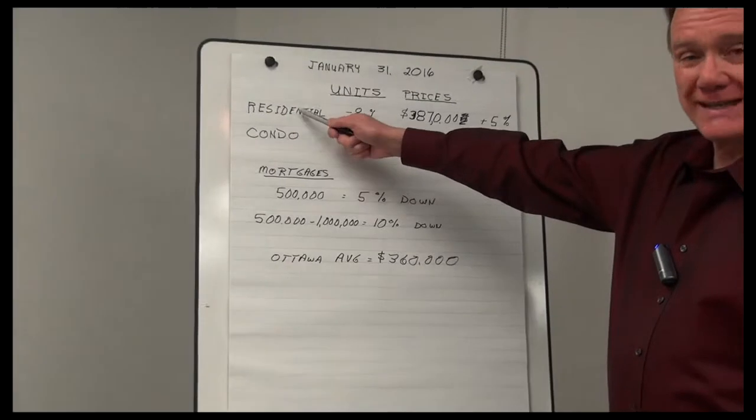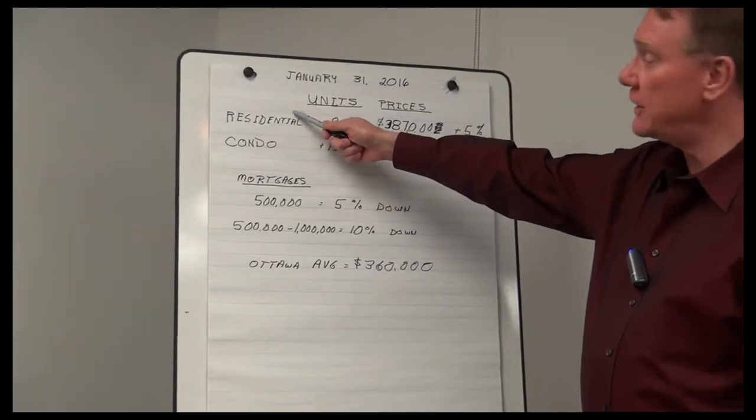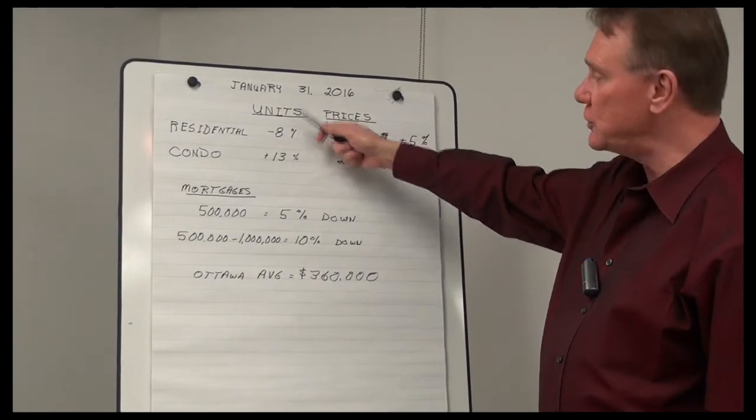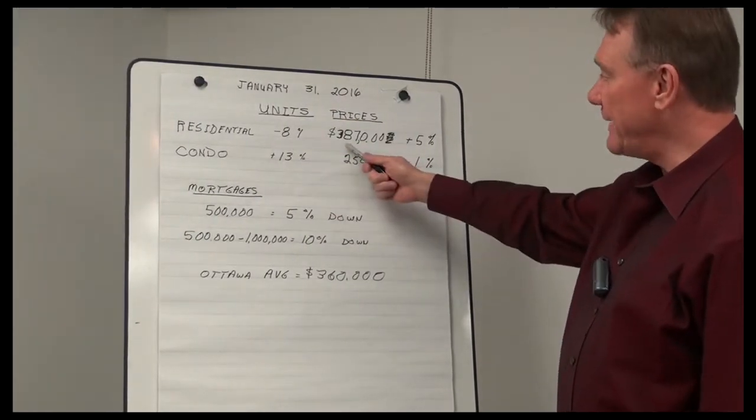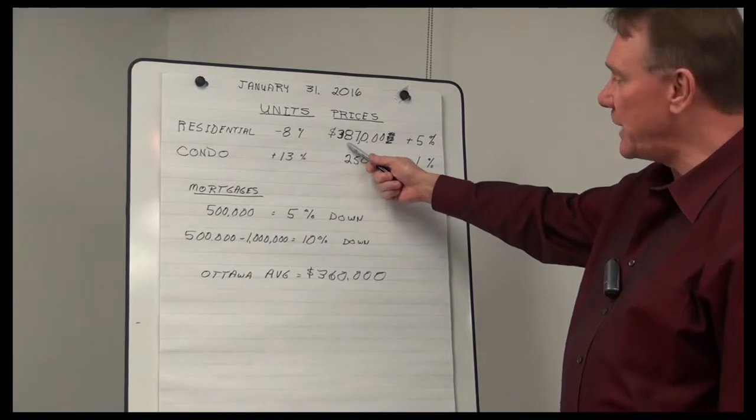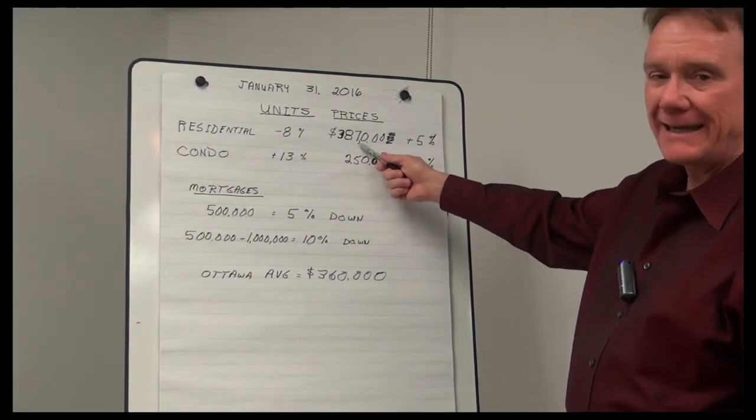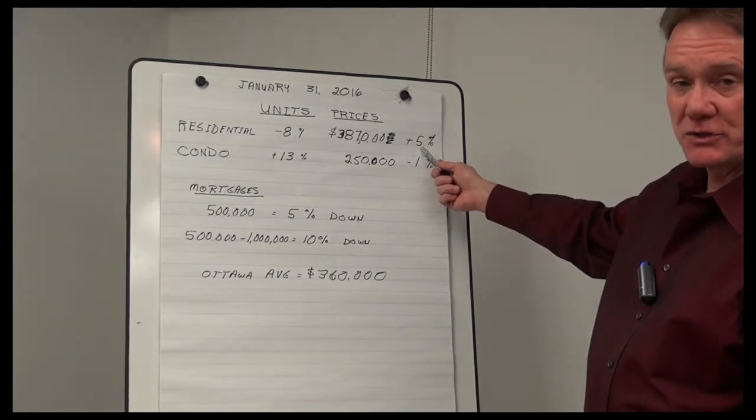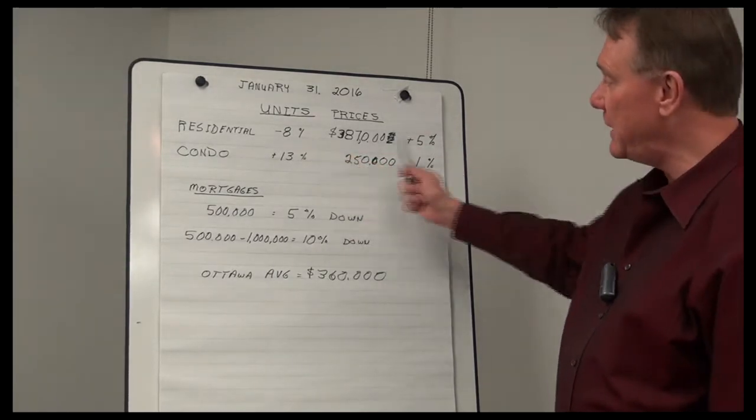So, in terms of residential property, that's anything that is not a condo. The number of units sold or the number of homes sold was down 8%, and the average price of one of these residential properties is now $387,000, which is an increase of 5% in prices. So, units down 8, prices up 5.